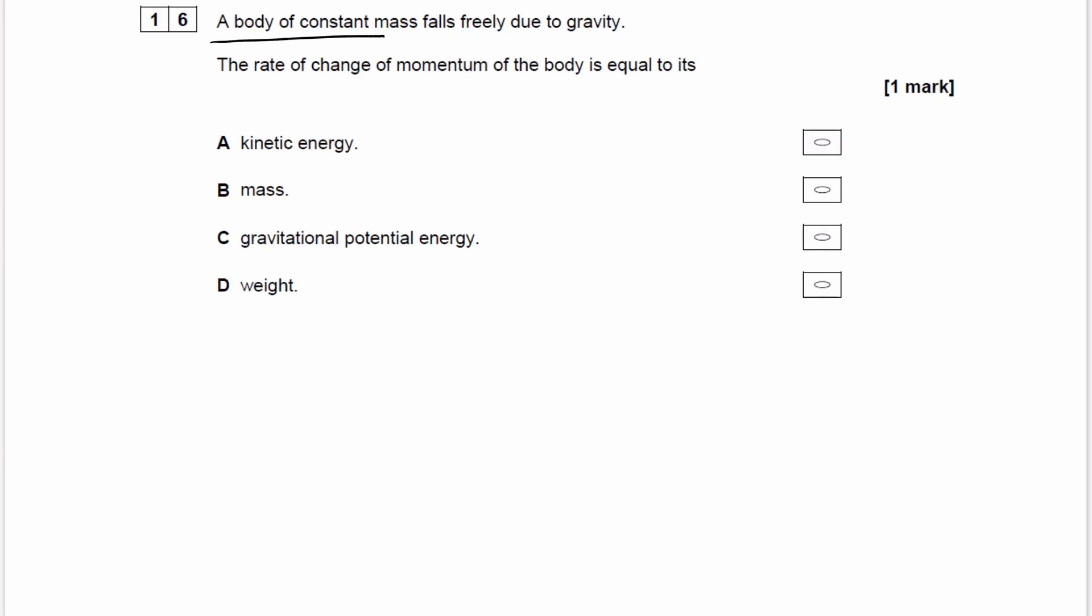We have a body of constant mass falls freely due to gravity. So if it falls freely due to gravity, that would mean that the acceleration is equal to 9.81 downwards.